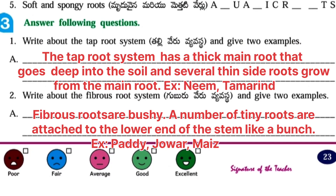Second question: write about the fibrous root system and give two examples. Answer: fibrous roots are bushy. A number of tiny roots are attached to the lower end of the stem like a bunch. Example: paddy, jowar, and maize, etc.